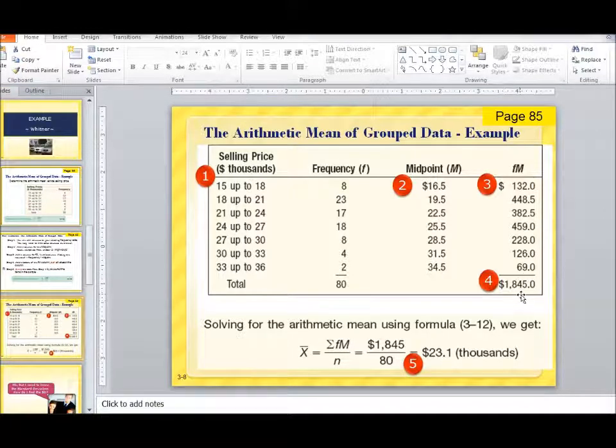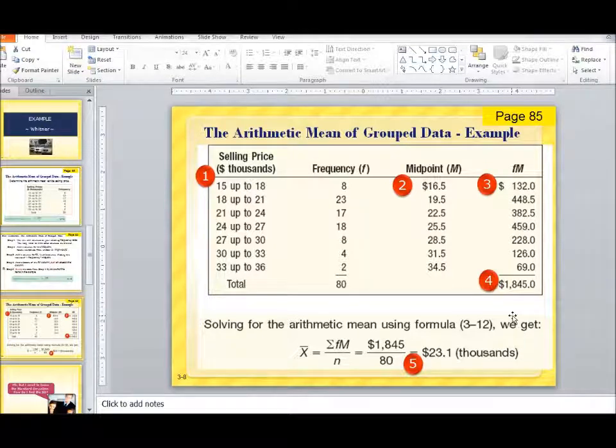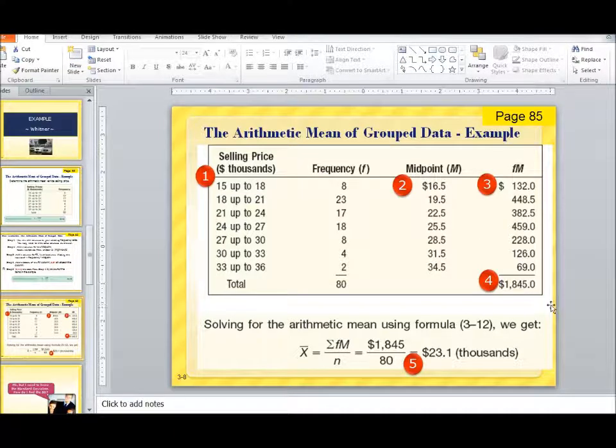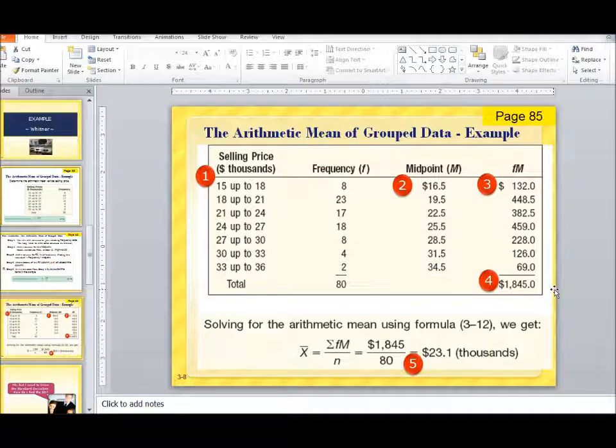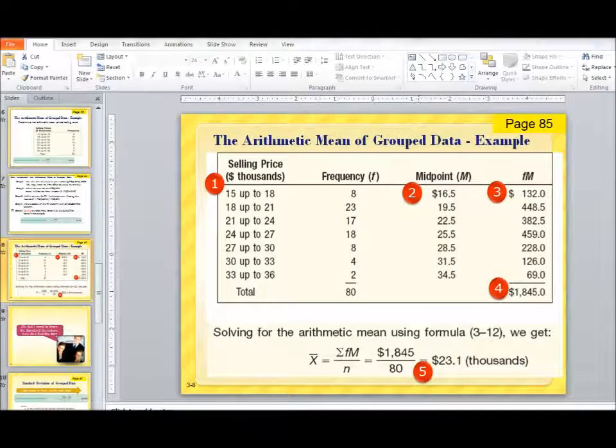Once you get all those values and they are nicely organized in a column like this, what does our formula tell us to do? It says to take each of those values, f times m, see how we have labeled the column, and sum that up. So that is what we have done. The sum is 1845, but we are not done yet. We need to divide by lowercase n. This is a count of how many items were in the sample. If we return to the frequency, this is a count of all the observations. If we sum that up, we get 80. Divide 80 into our sum, and we come up with 23.1000. If we had the raw data and we went back and we calculated the average, we might find that it is a little bit different. But that is okay. In this case, we are very specifically calculating the arithmetic mean of grouped data.